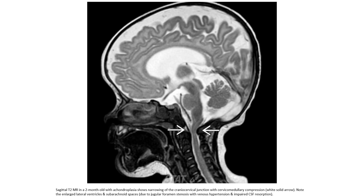This is an example of achondroplasia in the brain. What we can see is narrowing of the cranial-cervical junction with cervical medullary compression, enlarged lateral ventricles and subarachnoid space, due to jugular foramen stenosis with venous hypertension and impaired CSF resorption. The key point is cranial-cervical junction narrowing.